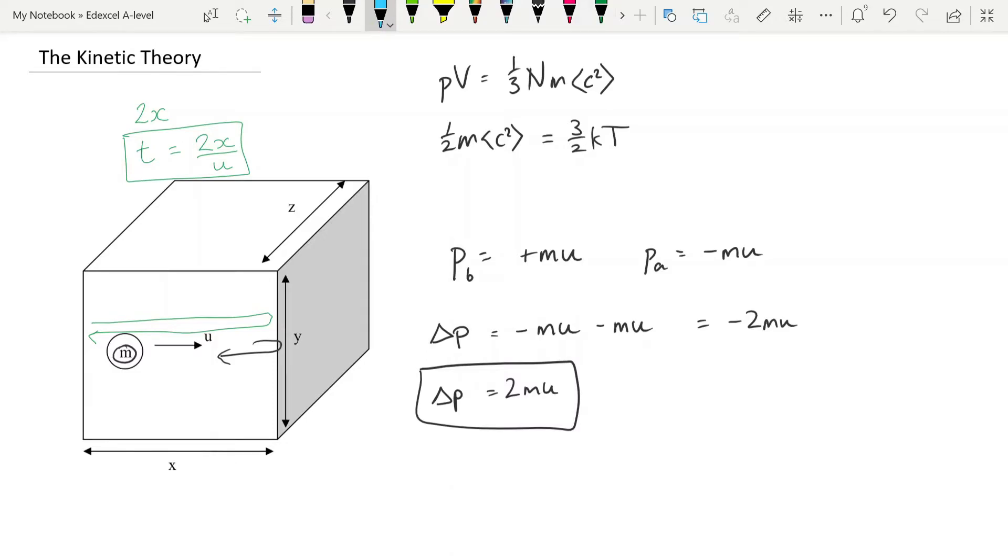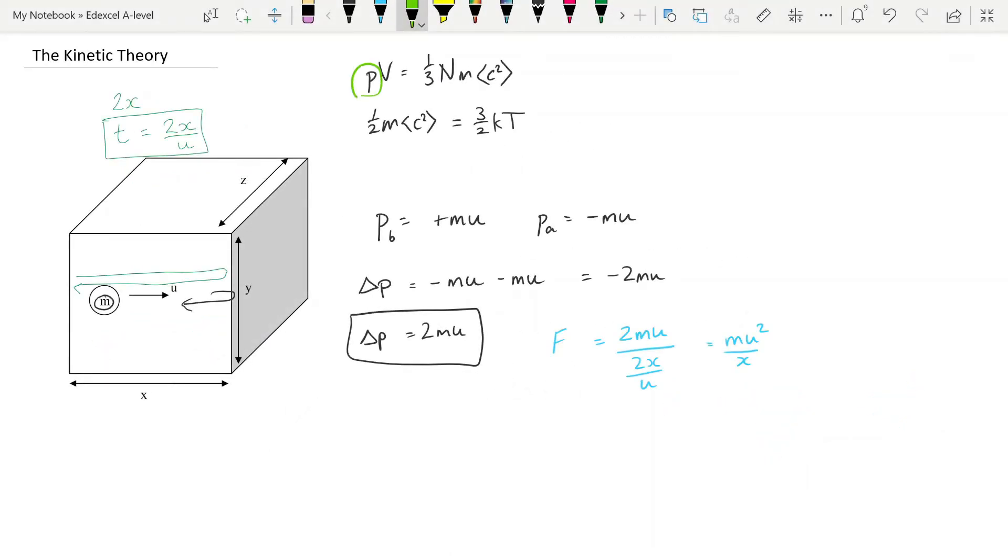Now we can take these two equations and say, well we know that force is the change in momentum over time. So our change in momentum between collisions is 2mu, and the time we've said is 2x over u. So if we rearrange that, we end up with mu² divided by x. That is our expression for force. Now obviously we're trying to get to a place where we're finding the pressure. So we're going to use this force, and we know that pressure is force over area.